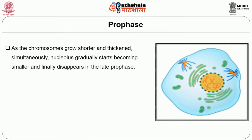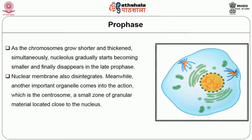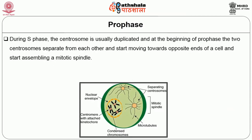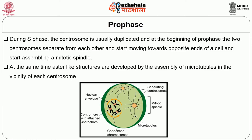As chromosomes grow shorter and thicker, the nucleolus gradually becomes smaller and finally disappears in late prophase. The nuclear membrane also disintegrates. Meanwhile, the centrosome — a small zone of granular material located close to the nucleus — comes into action. The centrosome is the main organizing center for the assembly of microtubules. During S phase, the centrosome is duplicated, and at the beginning of prophase, the two centrosomes separate and move towards opposite ends of the cell, assembling a mitotic spindle. Aster-like structures are also developed by assembly of microtubules near each centrosome.